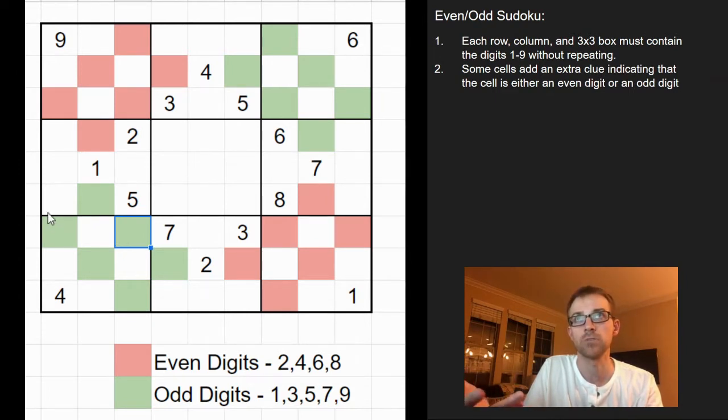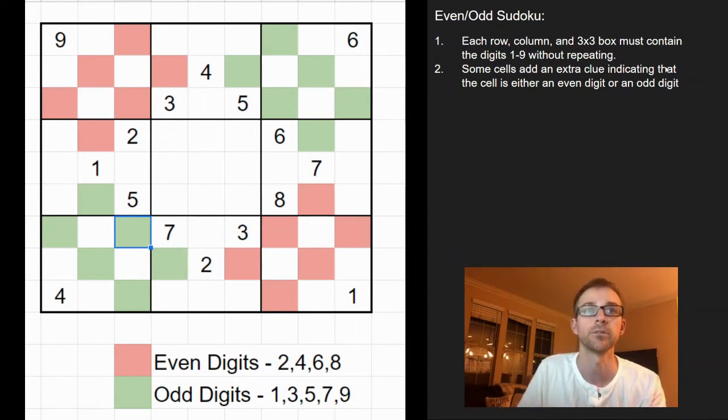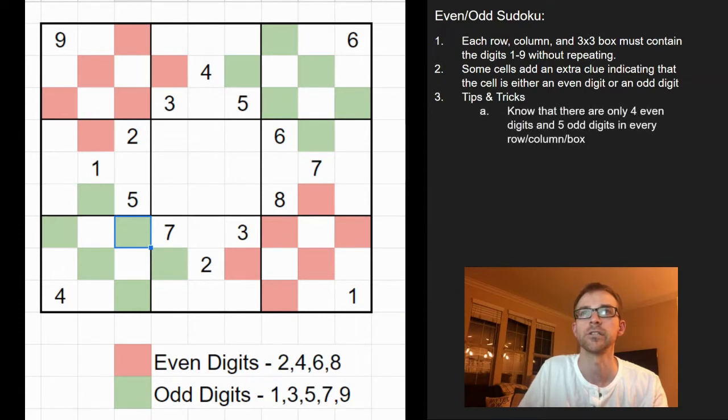And that can be fun because sometimes it can be challenging. They can give you less numbers at the start and you have to use different logic to get to the solution. But as far as the tips and tricks on how to solve these, the first thing to acknowledge is that every row, column, and 3x3 box is going to have 4 even digits and 5 odd digits.